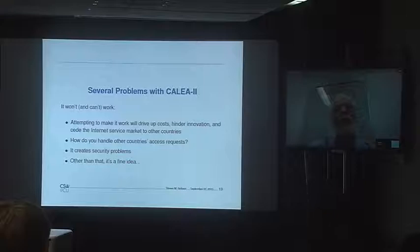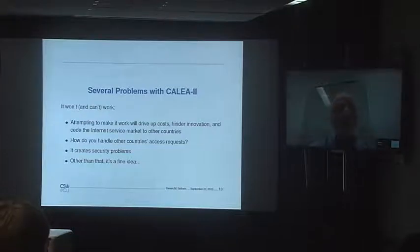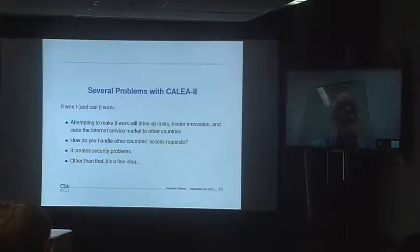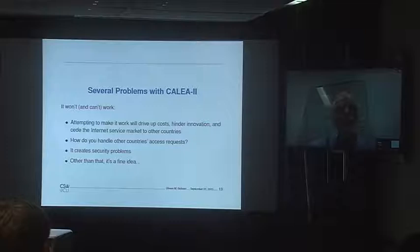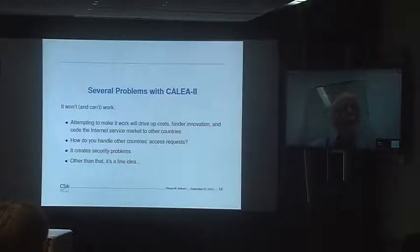Because internet services are inherently international — when I connect to something, I have no idea where the servers are — phone services are inherently local. A twisted pair phone line can't go more than about 5,000 meters from the phone switch. Internet? I don't know where the server is that this Google Hangout connection is going over. There are also security problems, as I've earlier outlined. Other than that, it's a fine idea, but it's not going to work.